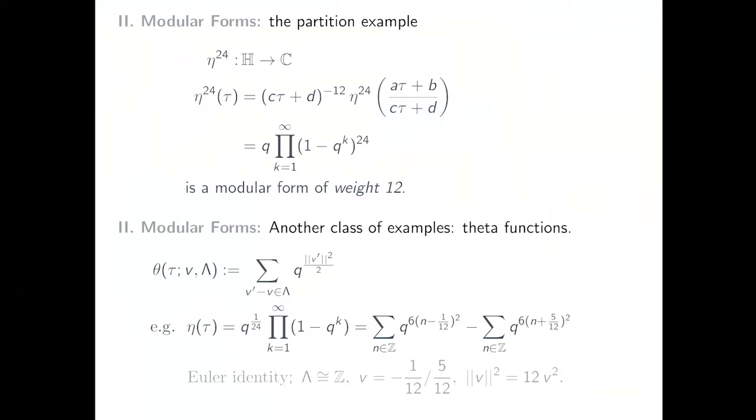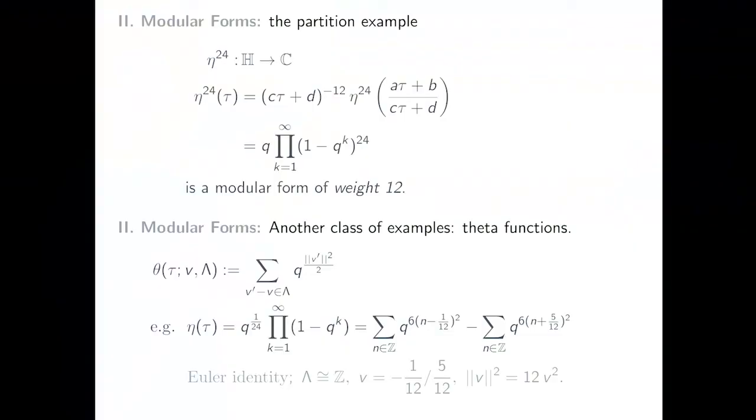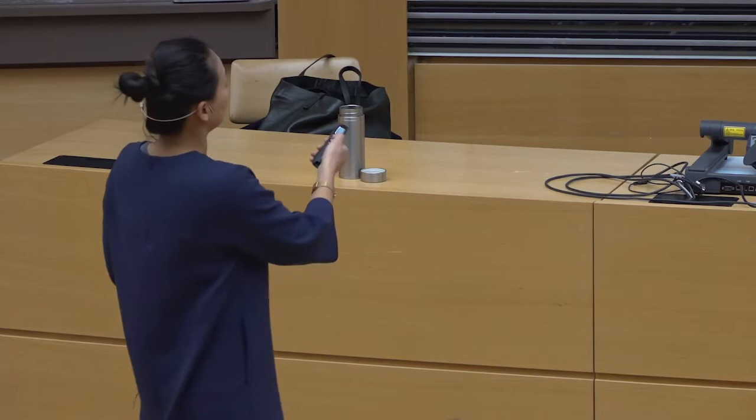Another example: as we have seen, the partition function gives something with a modular property, and it is given by one over the Dedekind eta function. If you take the 24th power of the eta function, it becomes an example of a modular form of weight 12. The eta function itself also transforms nicely — if we generalize the definition of modular forms further, we can include it, but it transforms with a phase, a 24th root of unity. Another nice class of examples is the theta function of a lattice: when you have a lattice, you can sum over lattice points with a bilinear form, and if it converges, you can show this will be modular.